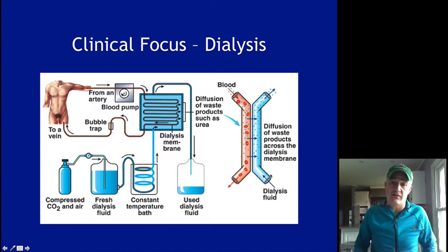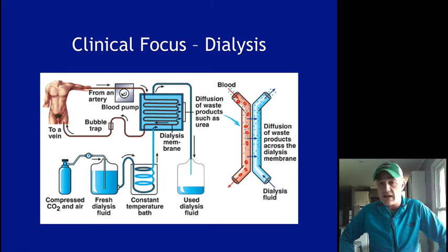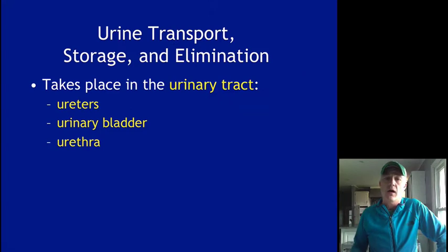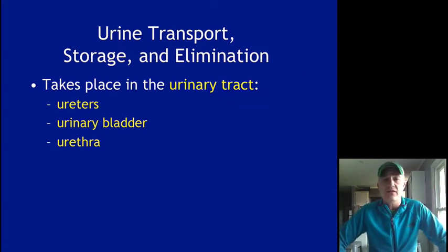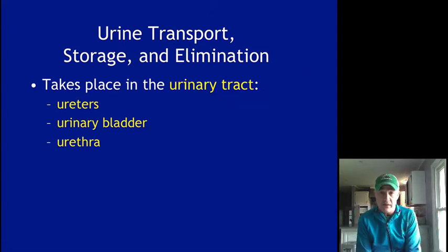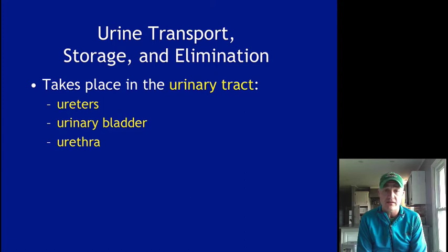That's the idea of what goes on with dialysis — one of those machines that helps pass blood through and then bring it back to the body. Outside of that, the rest of this is really about how we get urine from where it's made, which is the kidneys, down through the rest of the urinary tract: the ureters, the urinary bladder, and the urethra.